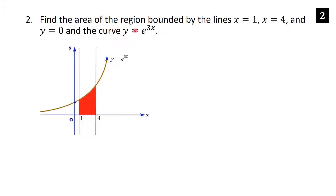When sketching, you don't have to be too accurate — the only important thing is that this curve is always above the x-axis, because e to something is always positive. In particular between 1 and 4 it's definitely positive, so the area is just the straightforward integral from 1 to 4 of e to the 3x dx.